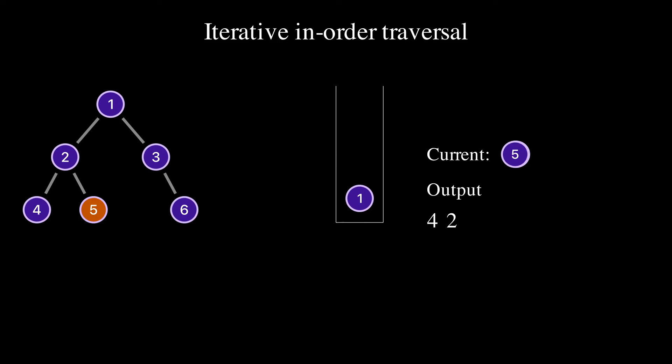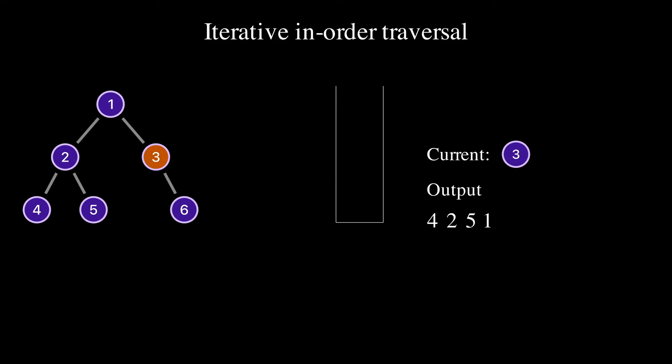Current is not null. We push node 5 to the stack and set the current to null because node 5 doesn't have a left child. We pop node 5 from the stack, print 5 to the output, and set the current to null because node 5 doesn't have a right child. Current is null. We pop node 1 from the stack, print 1 to the output, and set current to node 3 because node 3 is the right child of node 1.